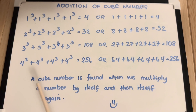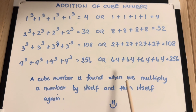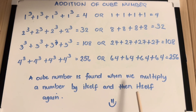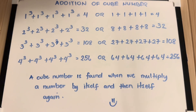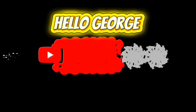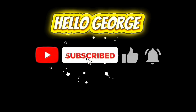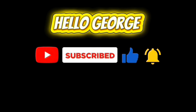A cube number is found when we multiply a number by itself and then itself again. Please don't forget to like and subscribe to our channel. Thank you, have a great day everyone.